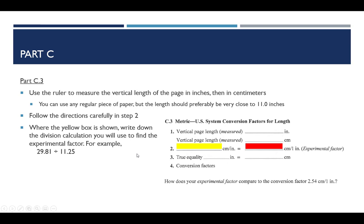Follow the directions carefully that you see in step 2 in the instructions. Now, I find that sometimes students have a hard time with the instructions on step 2. So let me clarify what I want. Where you see the yellow box here from the report sheet, it just gives you a line and then says centimeters over inches. What you want to put there is the division calculation that you use to find the experimental factor. So, for example, here, if it was 29.81 as the centimeters and it was 11.25 as the inches, if that's what you had, which would not technically be correct, but if that's what you had, 29.81 and 11.25 there, you would put this calculation right here.